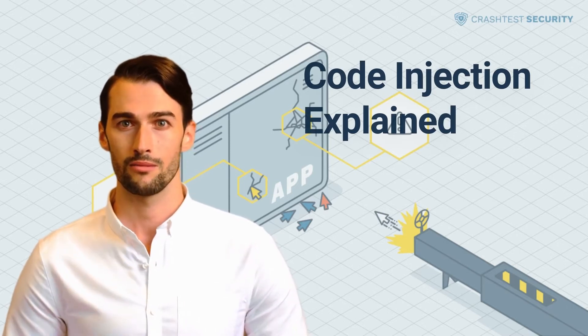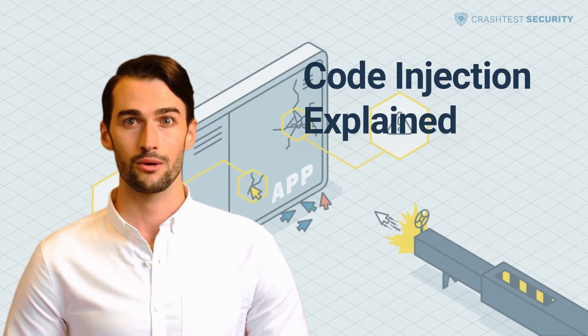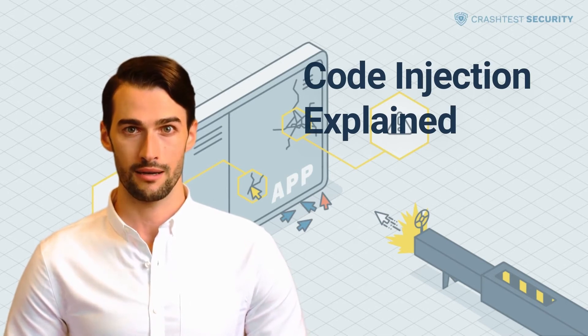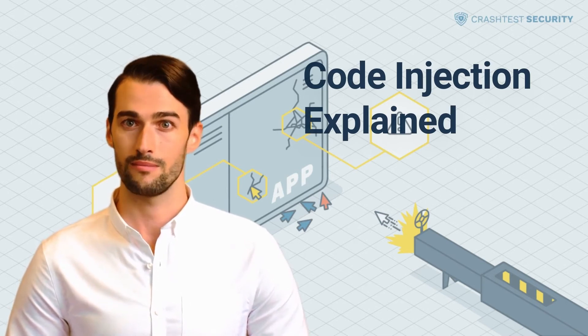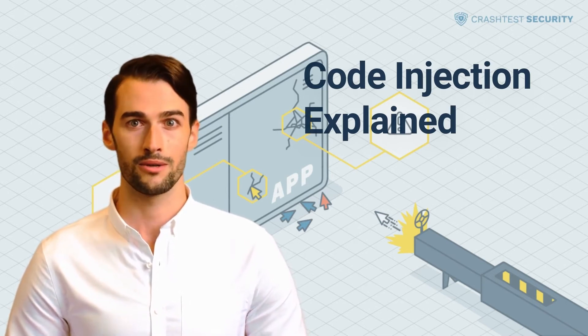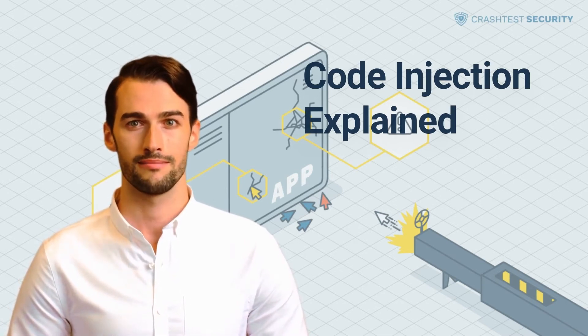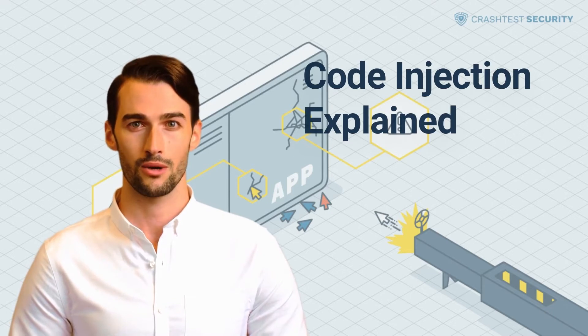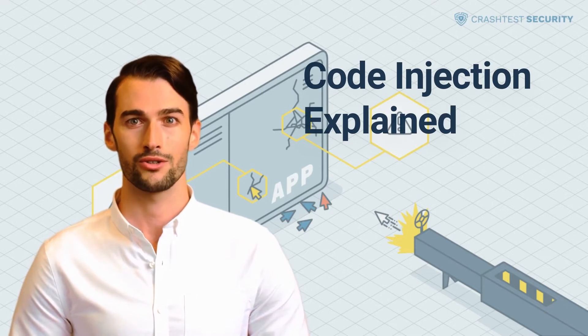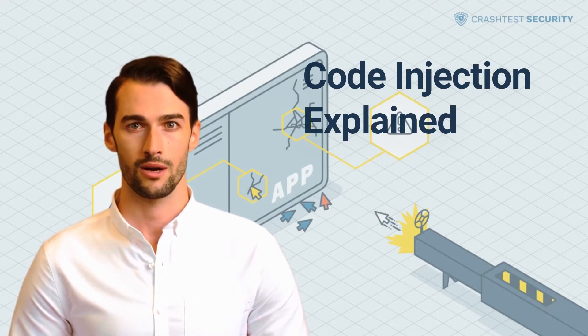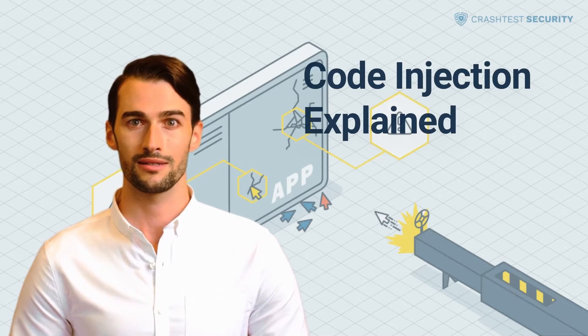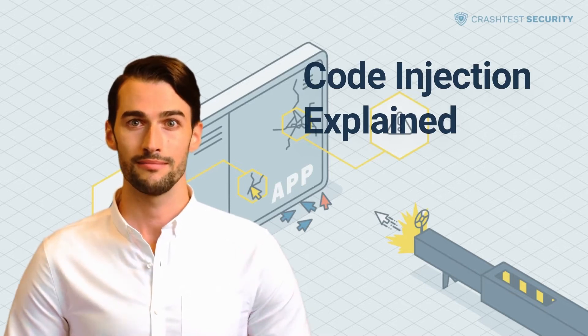OWASP ranks injection vulnerabilities as number one, with their detectability ranging from easy to complex. Though this sounds alarming, injection vulnerabilities are moderately hard to exploit with the proper practices and timely detection.